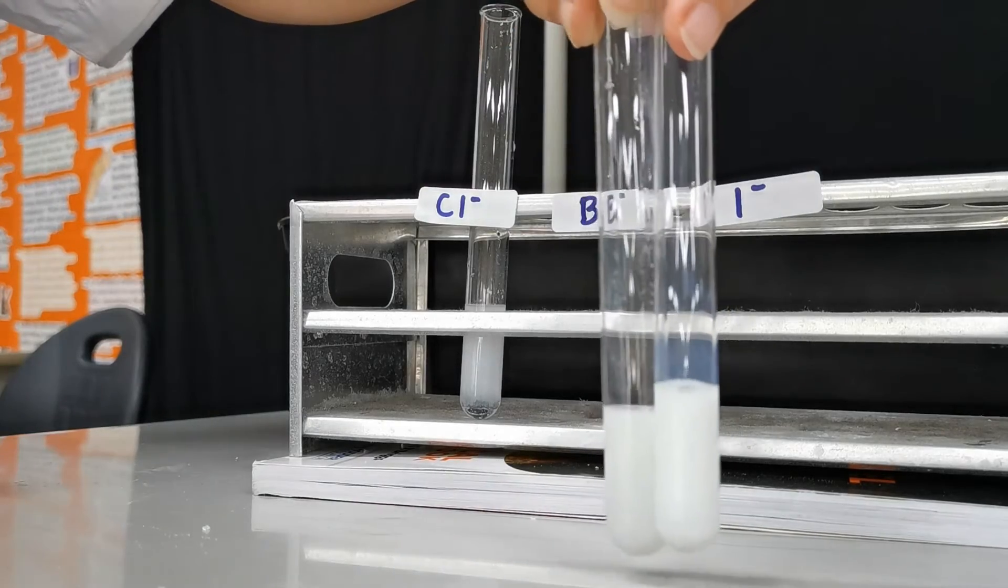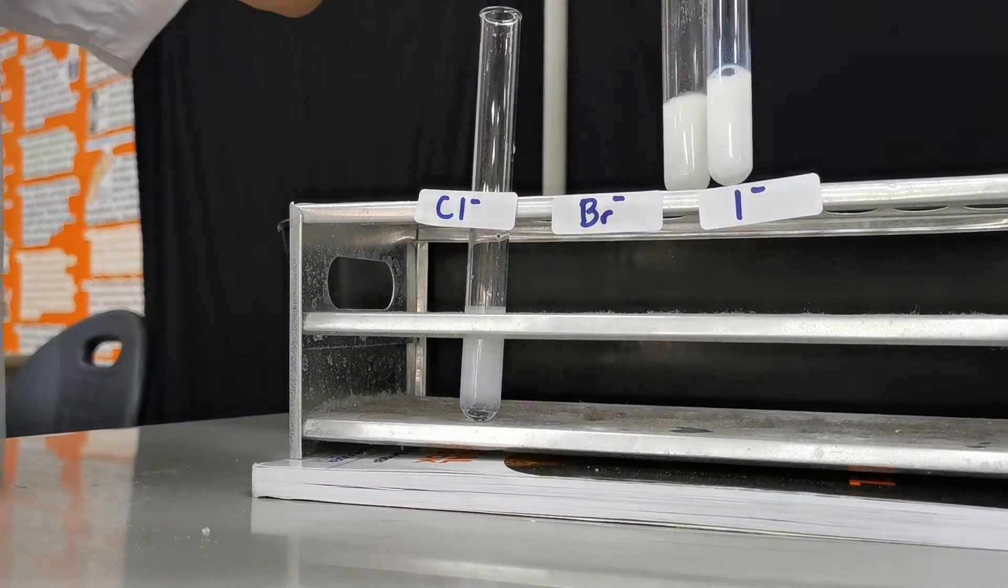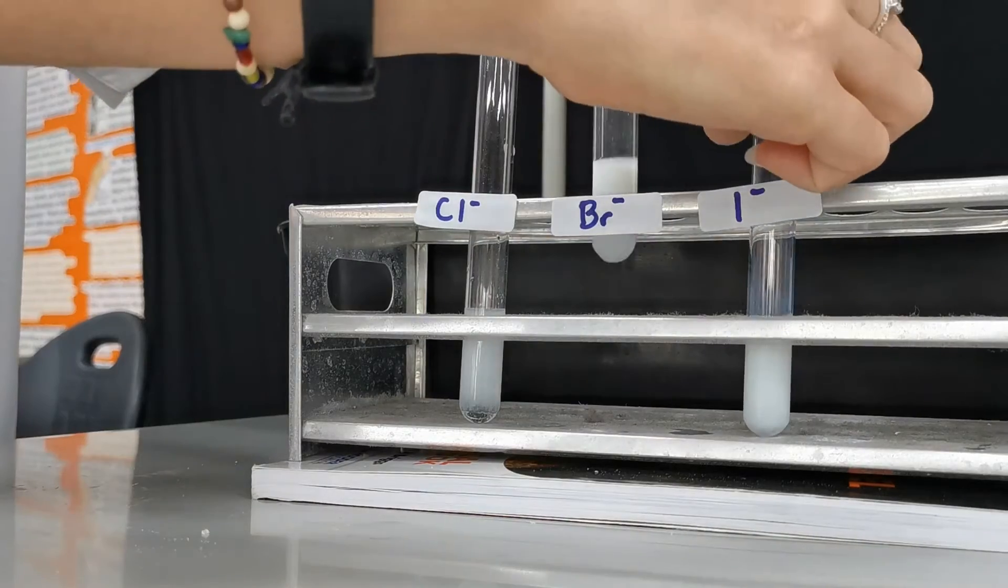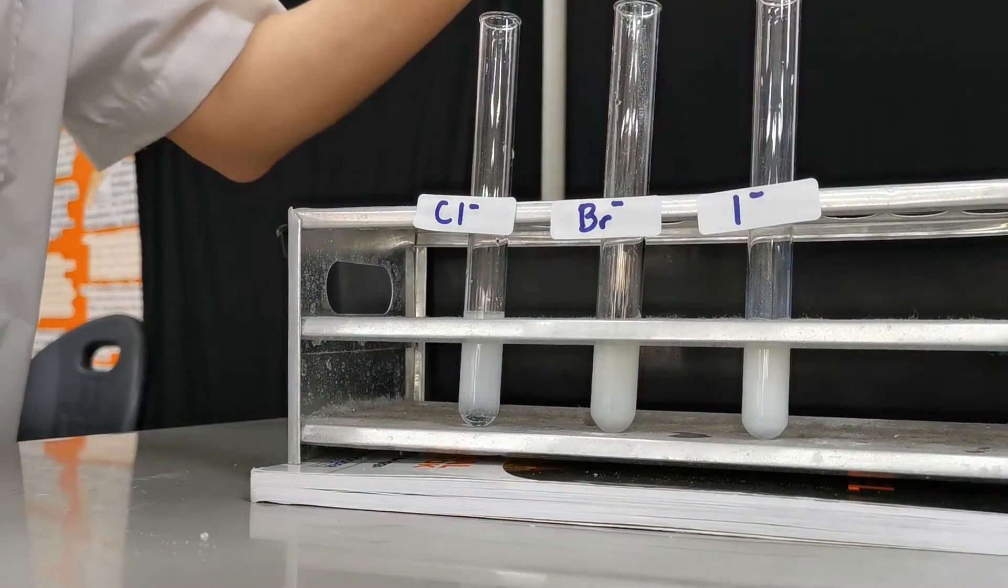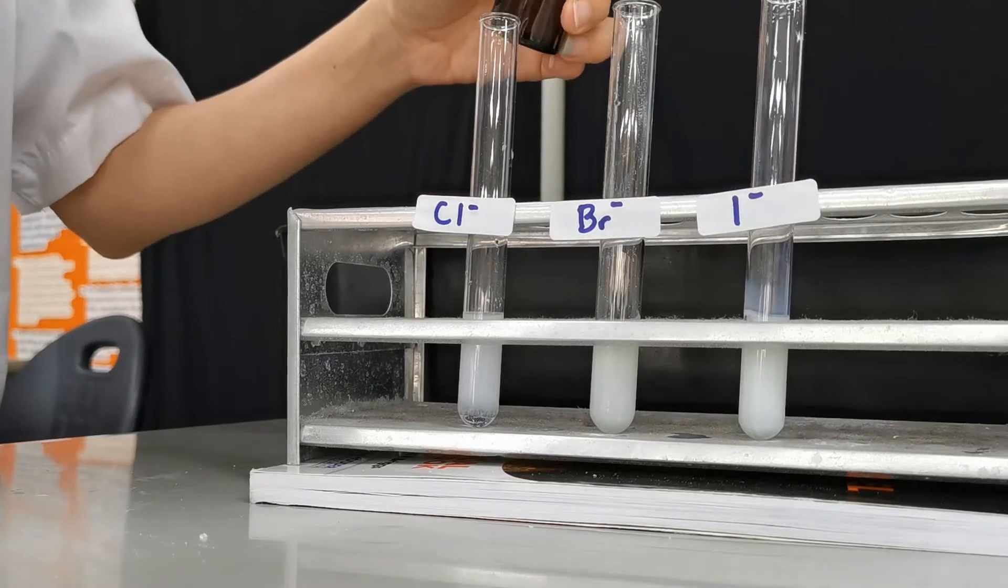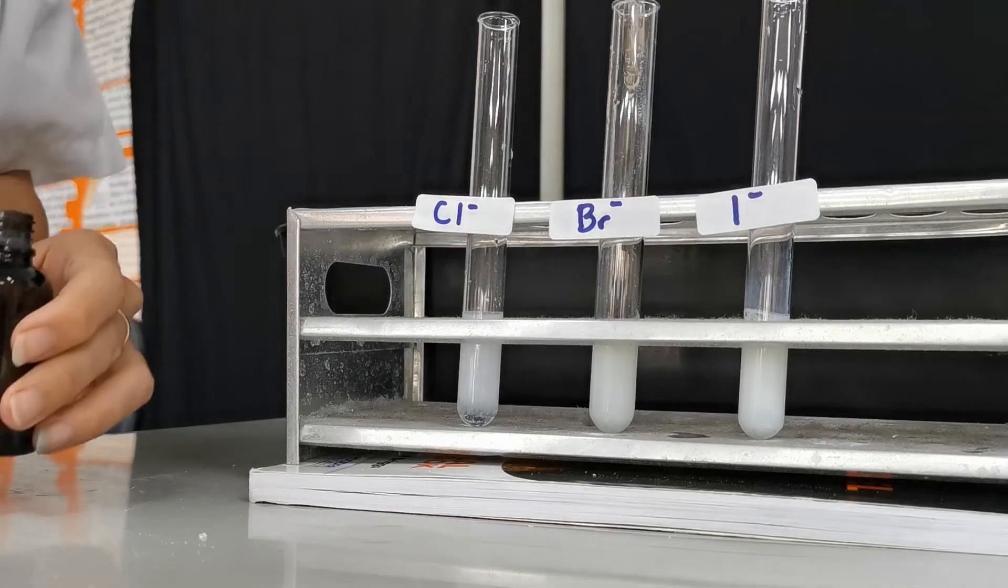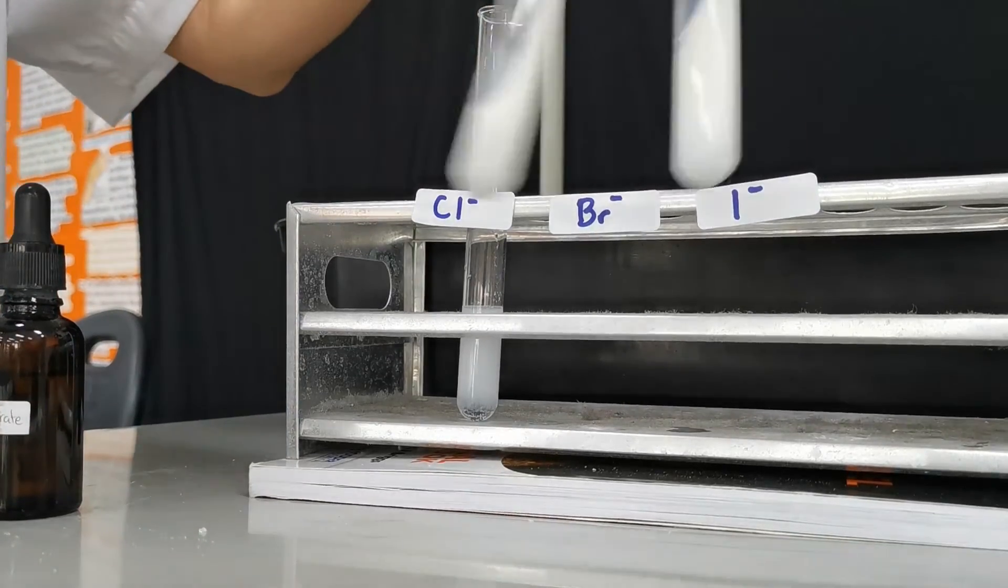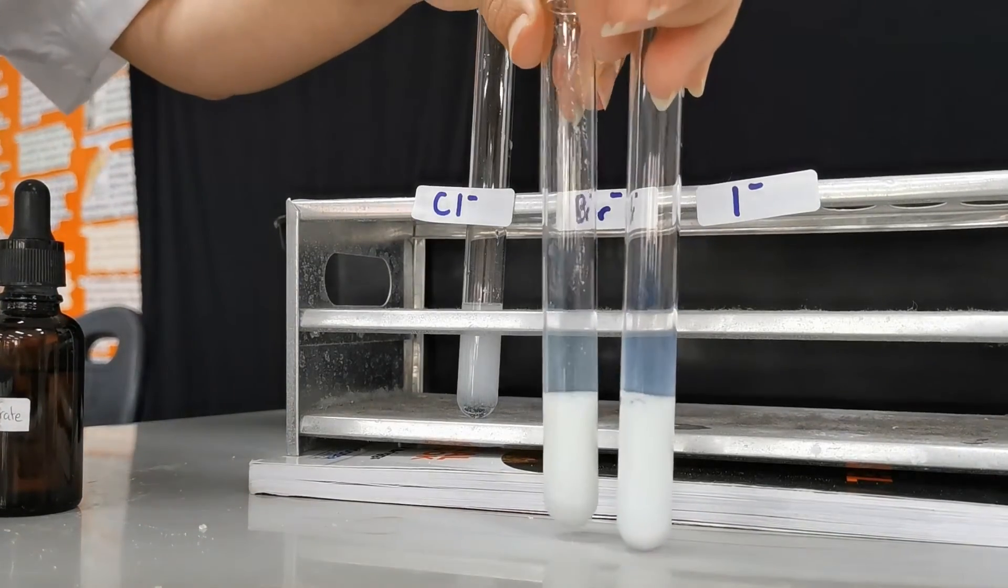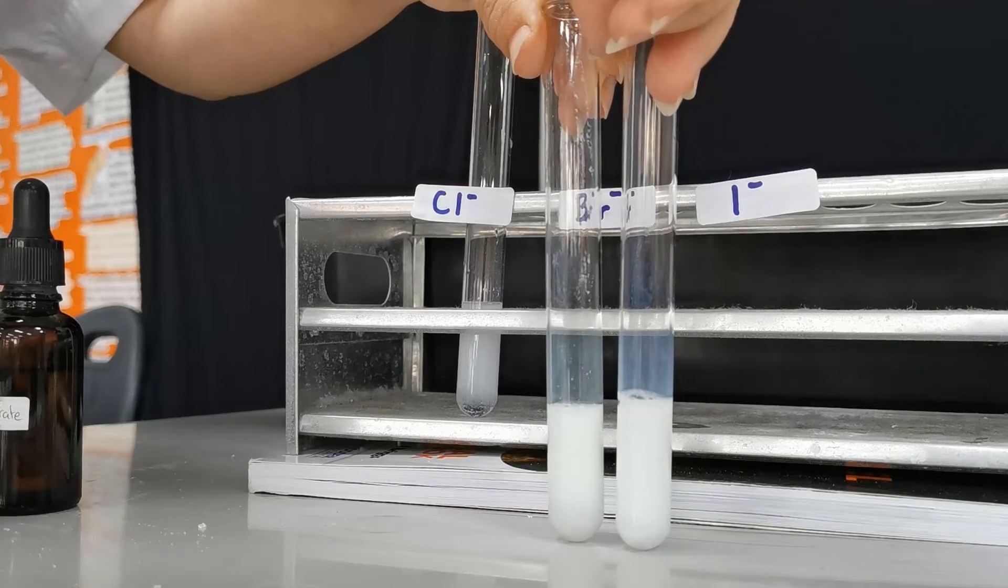Silver iodide is more yellow and silver bromide is more cream. So let me just add more silver nitrate into these two just to see if they make any difference. Very close color.